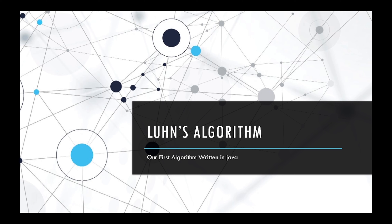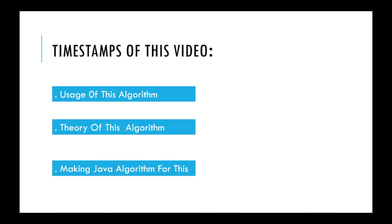Hey guys, welcome to another exciting video for our Java series. In this video we are going to make our own algorithm written in Java. This algorithm is very famous and is known as Luhn's algorithm. We will see where this algorithm is used and why it is very important these days, the theory behind it, and then we will implement it in Java.